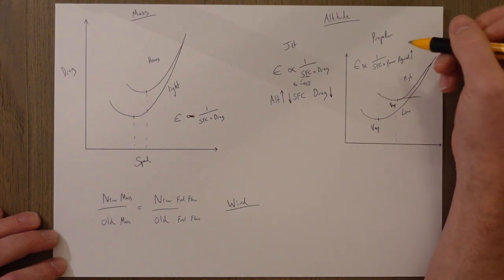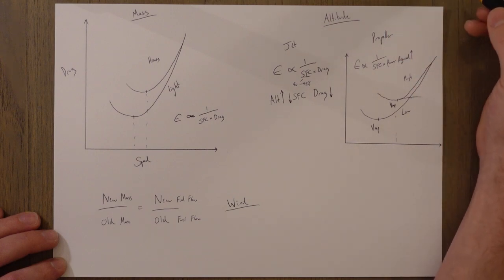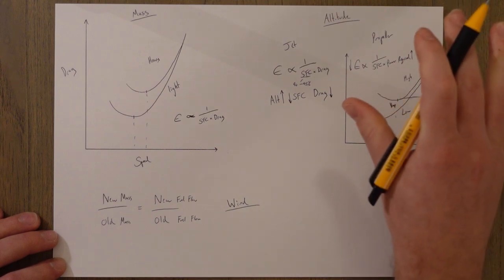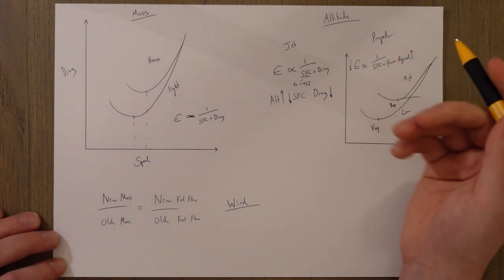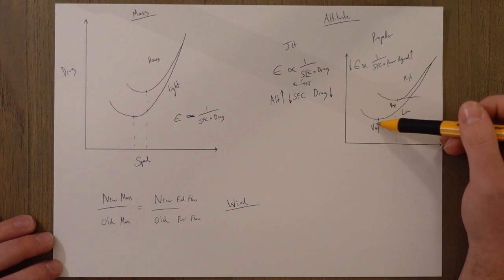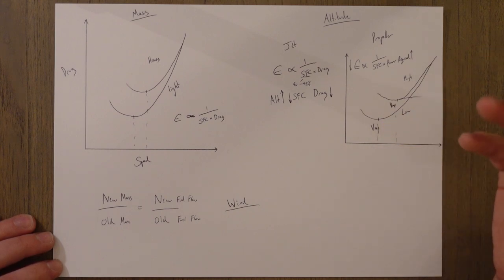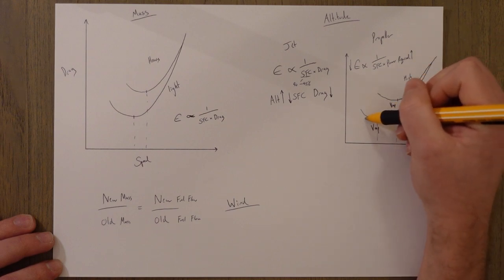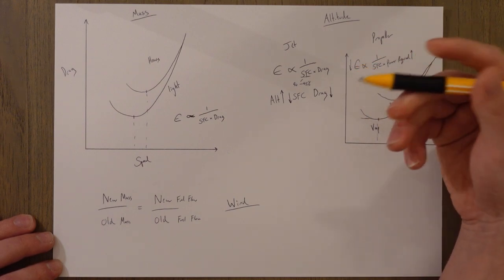So power required goes up if we go up in altitude which means that we're going to get lower endurance as a result. So it's the opposite to a jet. If we're lower down we're going to be flying at a slower speed for Vmp, our endurance speed, which means we need less power required and that means our endurance goes up.